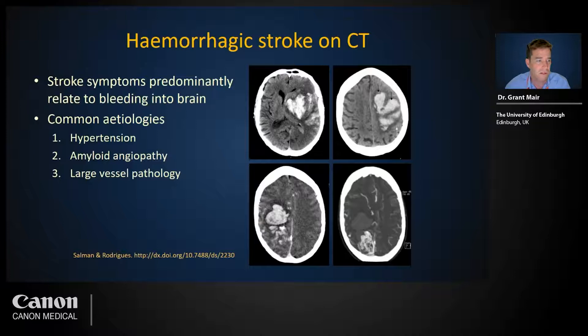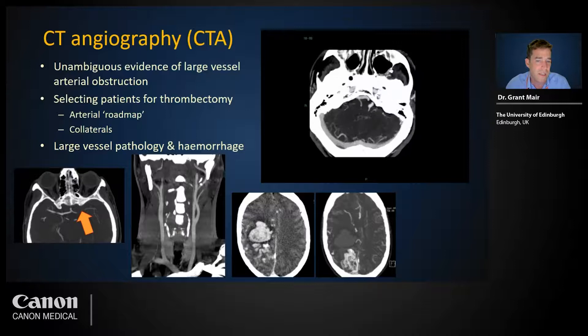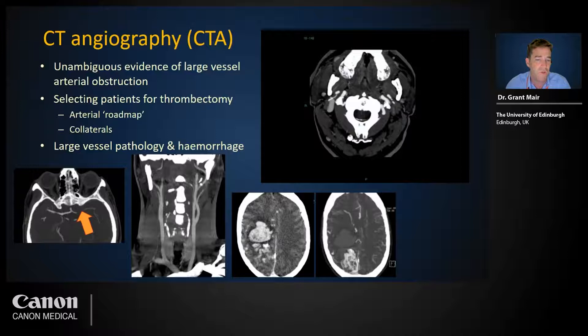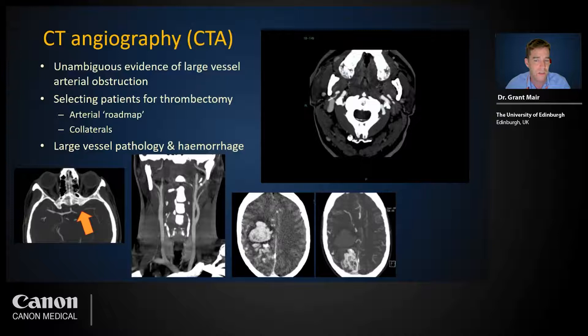CT angiography or CTA is used in stroke to provide unambiguous evidence of large artery obstruction, particularly for patients being considered for thrombectomy. CTA also provides a roadmap of the neck vessels used during thrombectomy to access the intracranial arterial blockage. Most CTA provides only a snapshot of the arteries at a single moment in time. Collateral circulation is better assessed using multi-phase CTA to appreciate delayed filling.